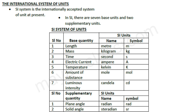The 7 SI base quantities are: Length, Mass, Time, Electric Current, Temperature, Amount of Substance, and Luminous Intensity. The 2 supplementary quantities are Plane Angle and Solid Angle.